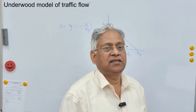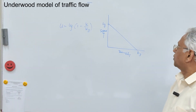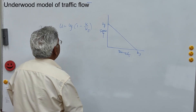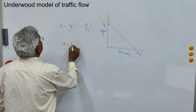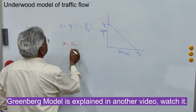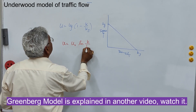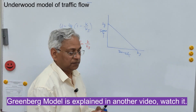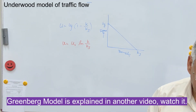Especially during high densities. To address this problem, Greenberg suggested a logarithmic model: u equals u0, or a constant c, into ln of k upon kj. This was the Greenberg model, which I discussed in detail in my earlier session.